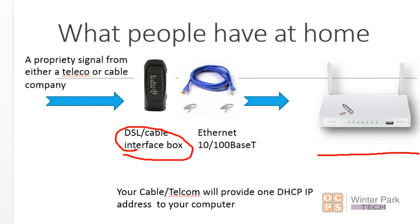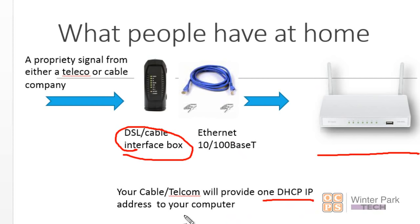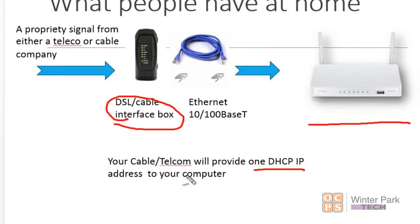A small switch is included, and this is typically what people have at home. Your telecom and ISP will provide you a simple DHCP IP so that you have an internet-addressable IP address. This is the type of structure that you're comfortable with, and we want to use this same environment to build your understanding of a business network.